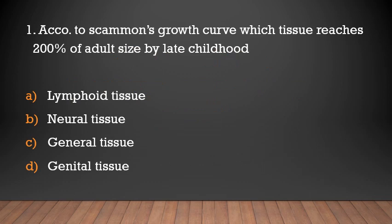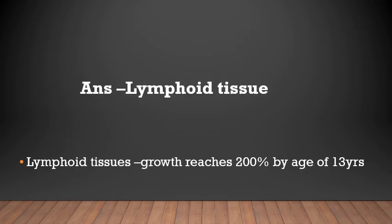According to Scammon's growth curve, which tissue reaches 200% of adult size by late childhood? Options: lymphoid tissue, neural tissue, general tissue, genital tissue. Answer: Lymphoid tissue. Lymphoid tissue reaches 200% of adult size by the age of 13 years.